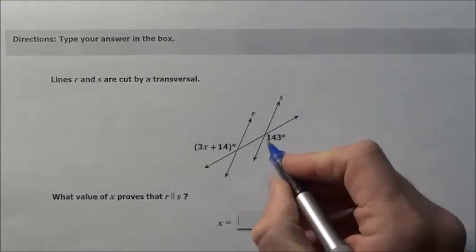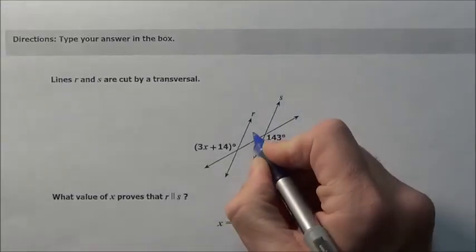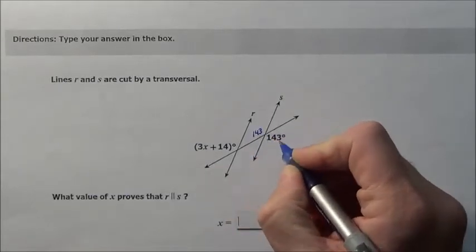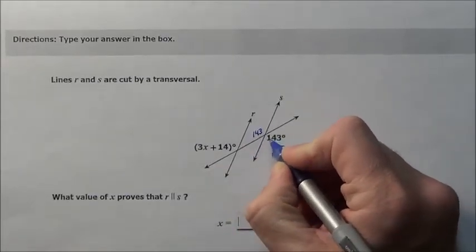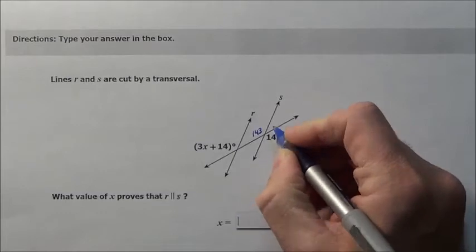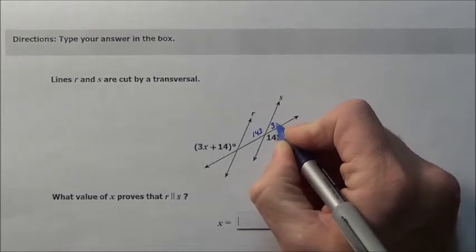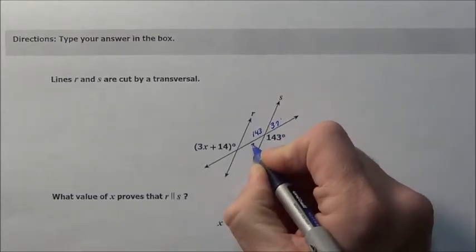Well if they're parallel, let's think of what we know. This is 143, so its vertical angle would be 143. This and this, or this and this, have to add up to 180, so that's going to be 37 degrees, making that 37.